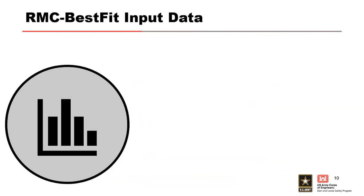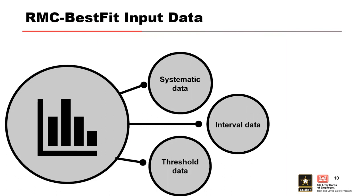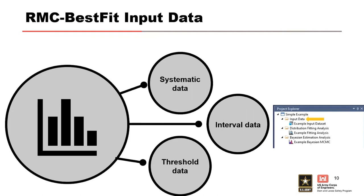Now let's talk about the project elements. First up is the input data. Input data consists of block annual maxima, which are assumed to be independent and identically distributed. Best Fit supports three input data types: systematic data, interval data, and threshold data. Here you can see where the input data set is organized in the RMC Best Fit Project Explorer window, right where that yellow arrow is pointed.